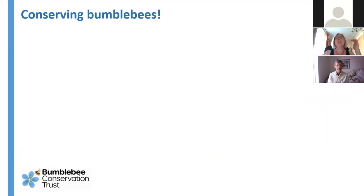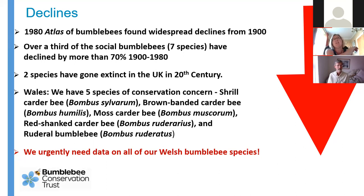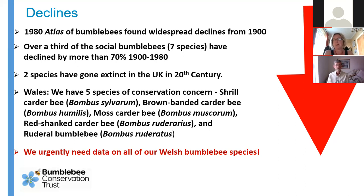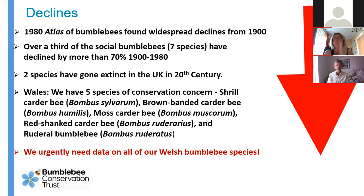Those declines - you'll hear talk of lots of different things: habitat loss, insecticides, pesticides, climate change. It's generally recognized that habitat loss has had the biggest single impact on bumblebee species in the last century. It's loss of forage, of species-rich landscapes, due to changes in agriculture basically. Those losses are pretty much due to changes in land management, and then the other things compound the problem.